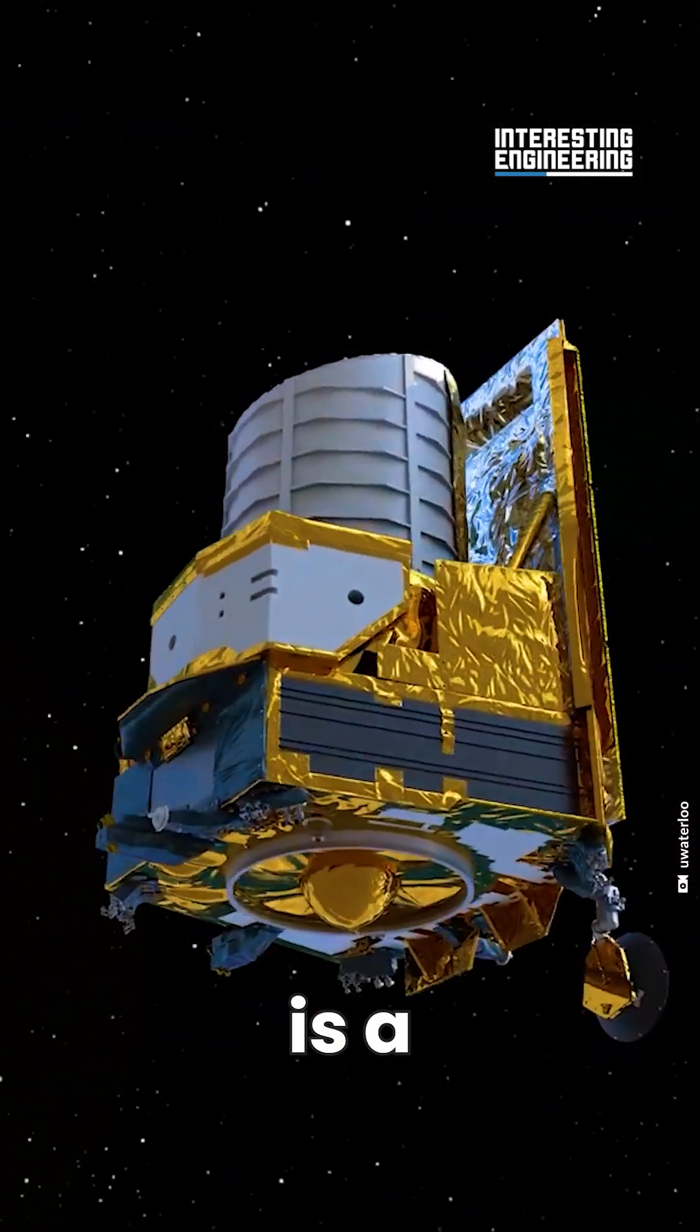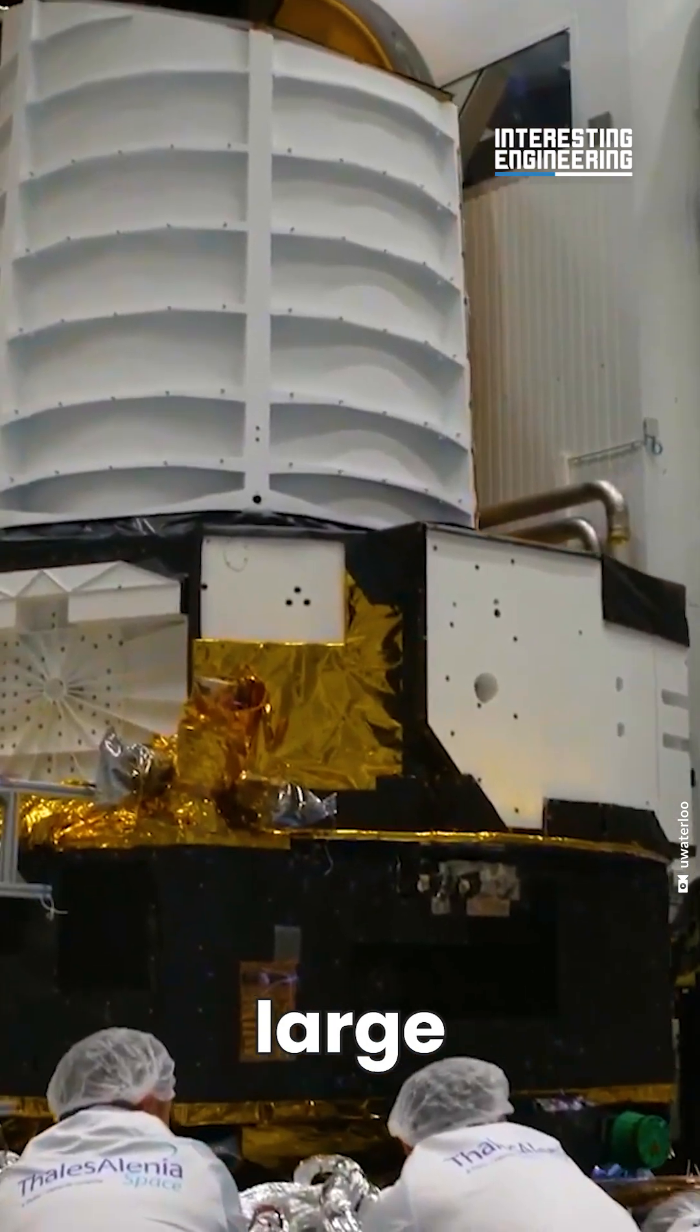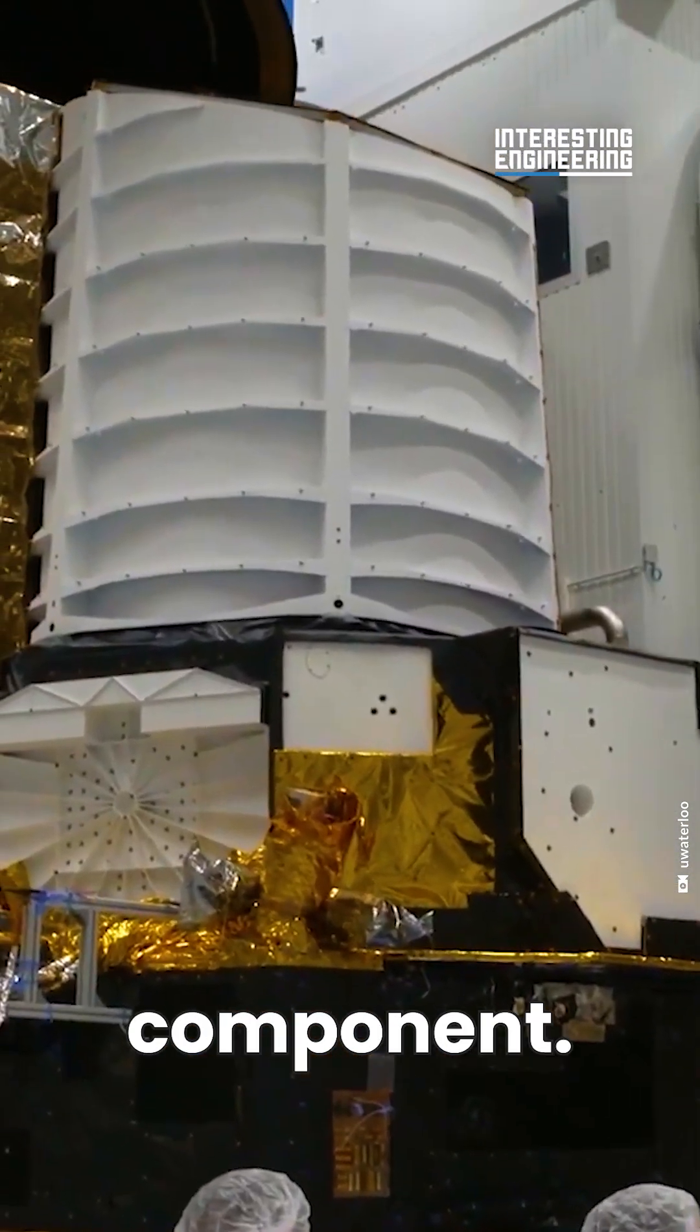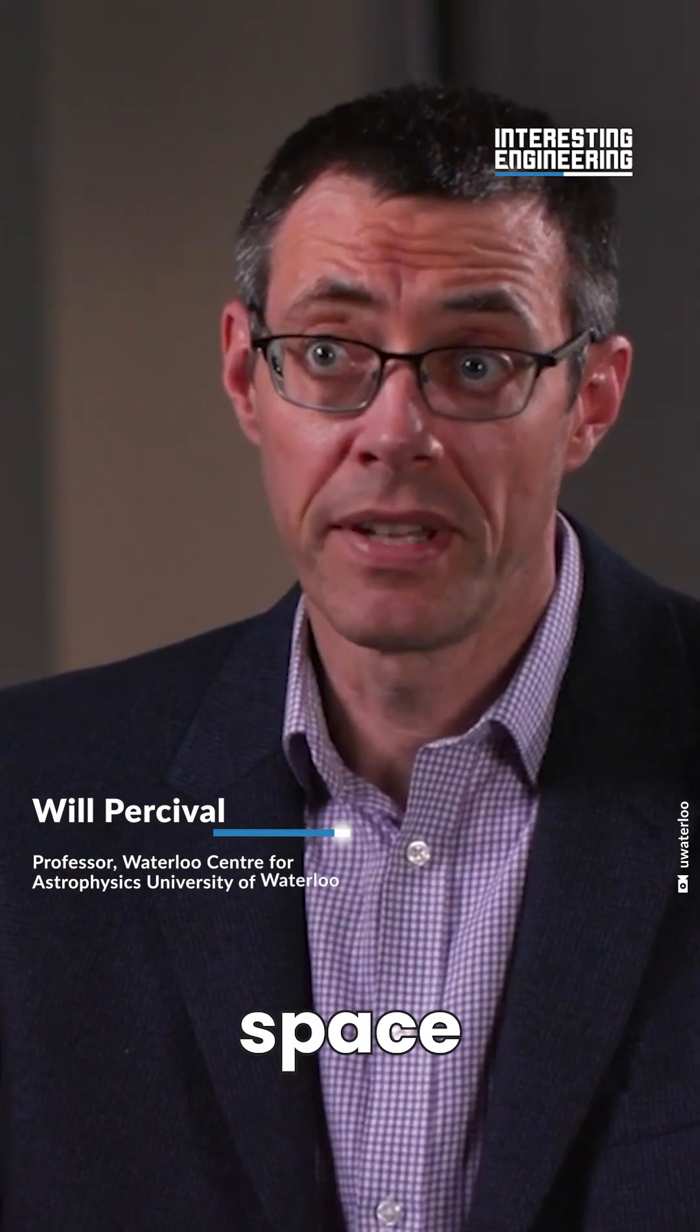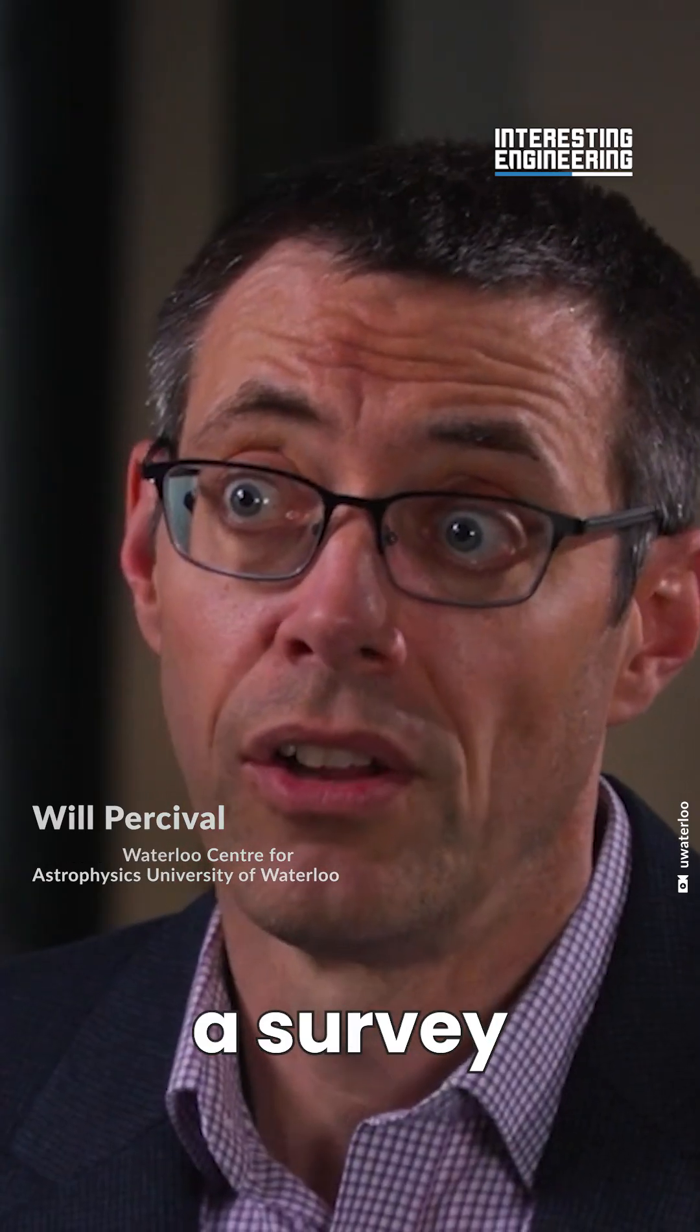The Euclid mission is a satellite mission led by the European Space Agency. It has a large Canadian component. It's going to go out into space for six and a half years and do a survey of the universe.